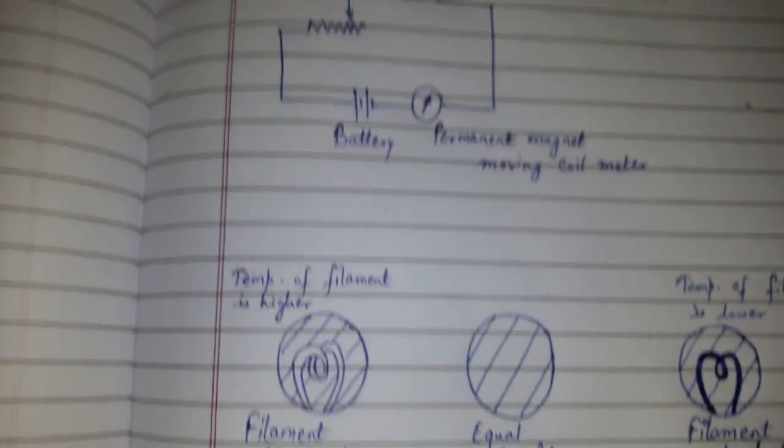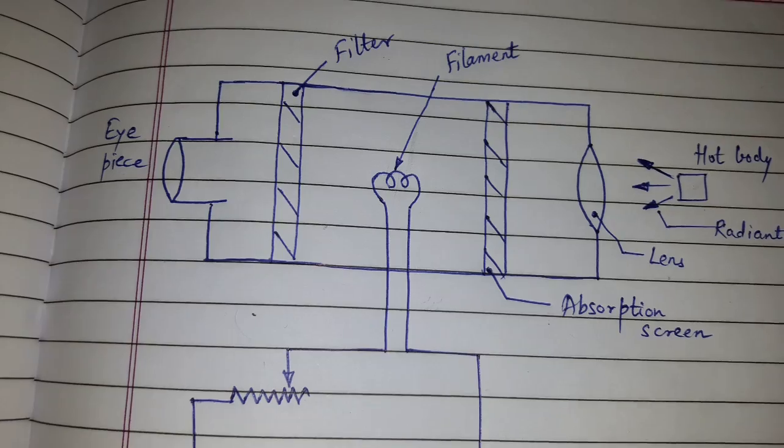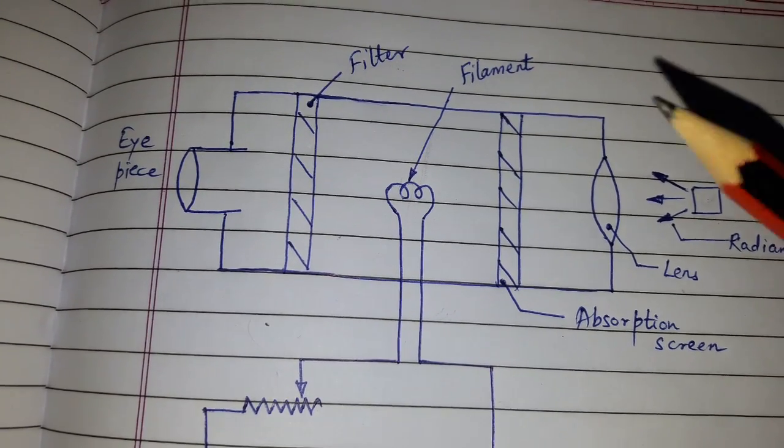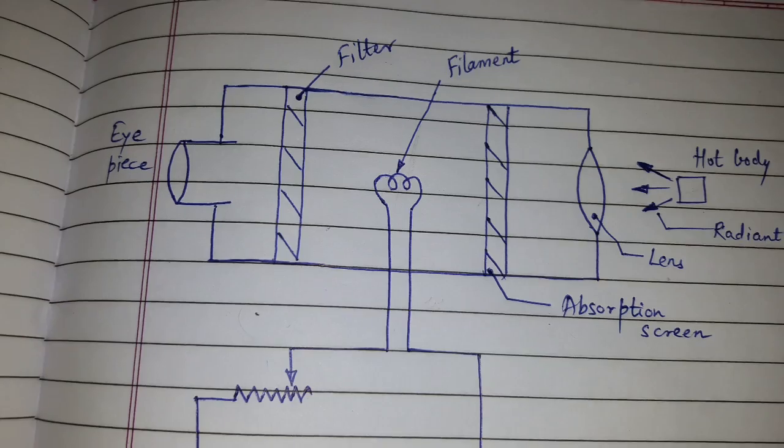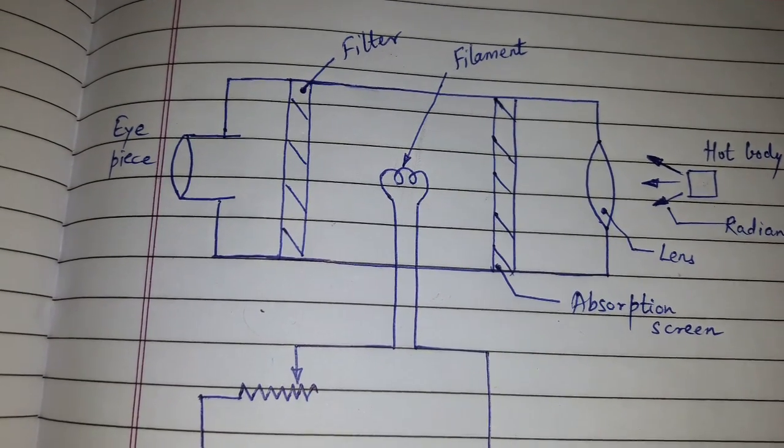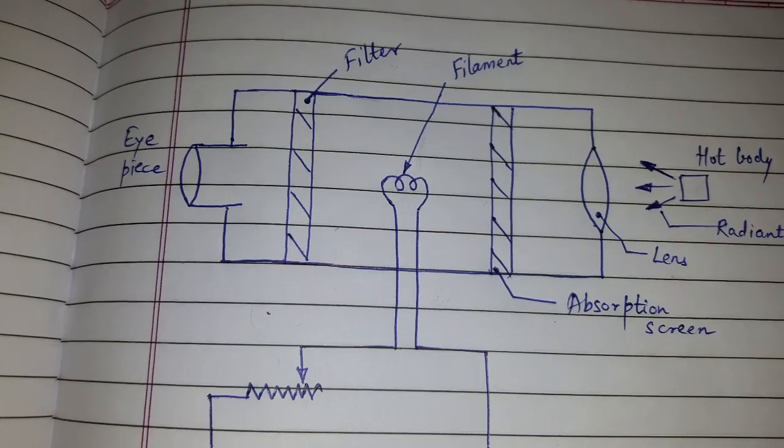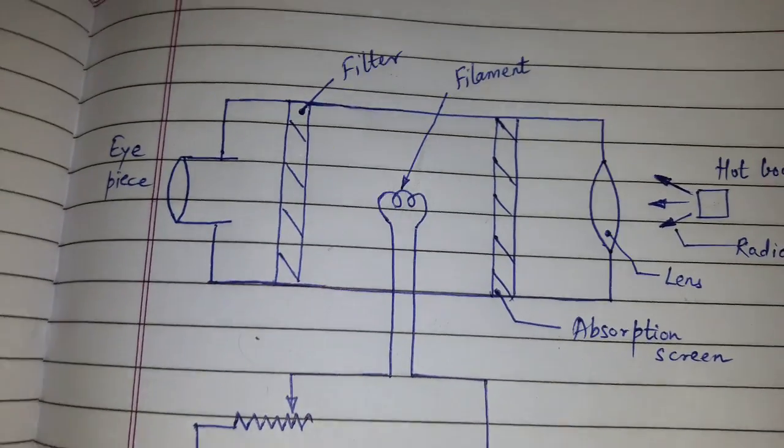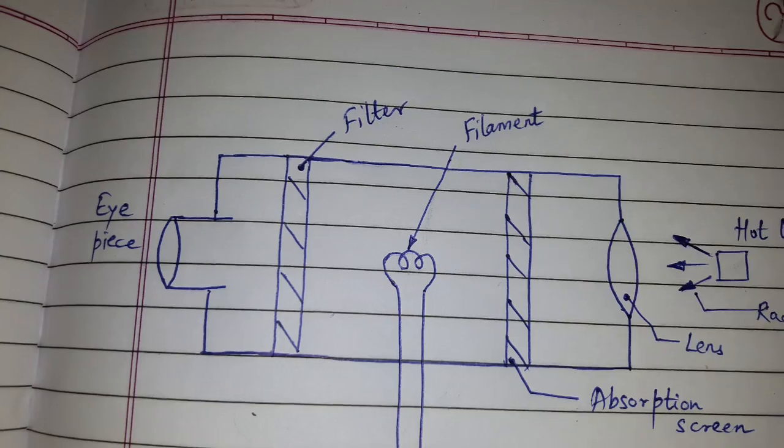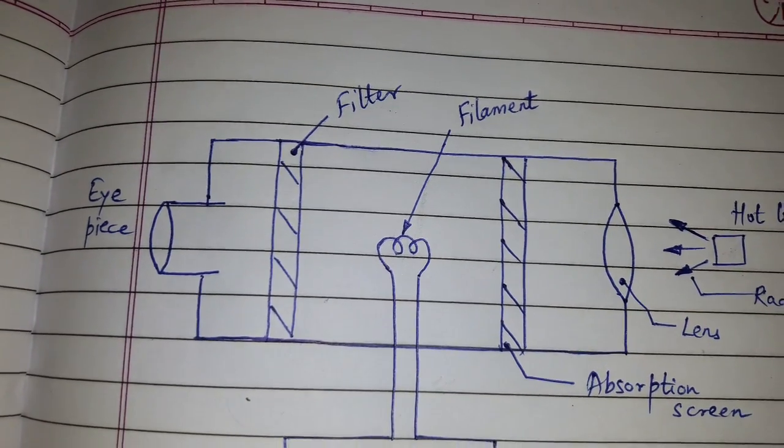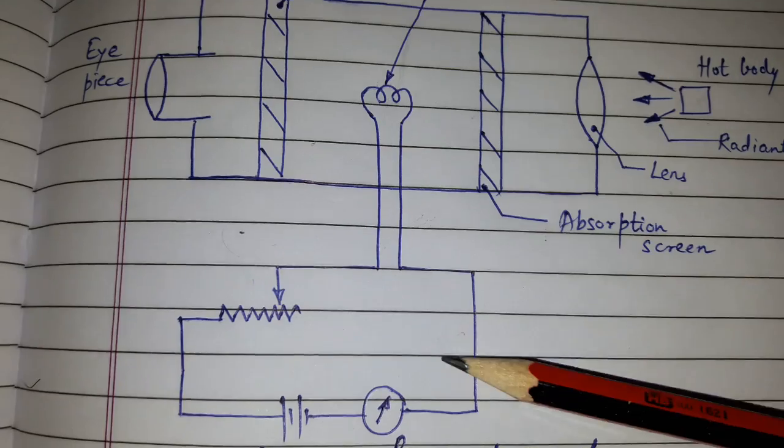The optical pyrometer can measure temperature up to 3000. Also, the pyrometer can directly be calibrated in terms of filament current.